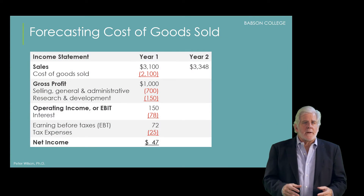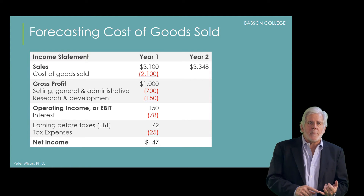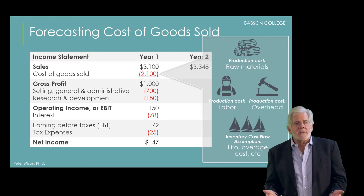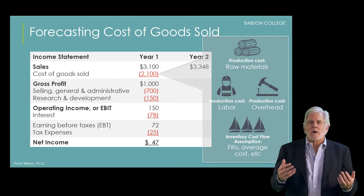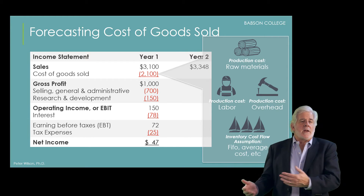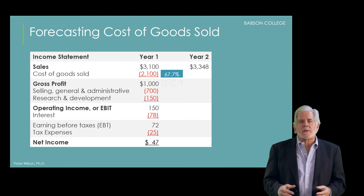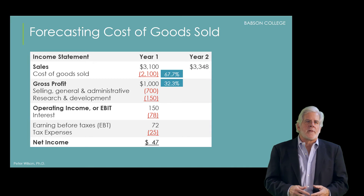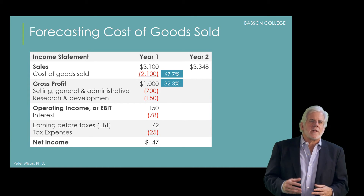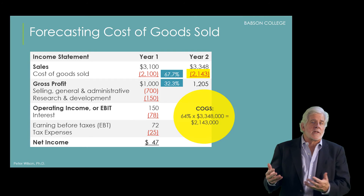Moving down the income statement, the next item to forecast is cost of goods sold. This number will always have a close relationship to sales and will be driven by the number of boats NebCo expects to sell as well as expectations about whether manufacturing costs will go up or down. These expectations are usually captured by forecasting cost of goods sold directly as a percentage of sales. In year one, NebCo's cost of goods sold was 67.7% of sales, giving a gross margin of 32.3%. Anticipating improvements in the production process, for year two they forecast a 64% cost of goods sold, which would lead to a 36% gross margin.